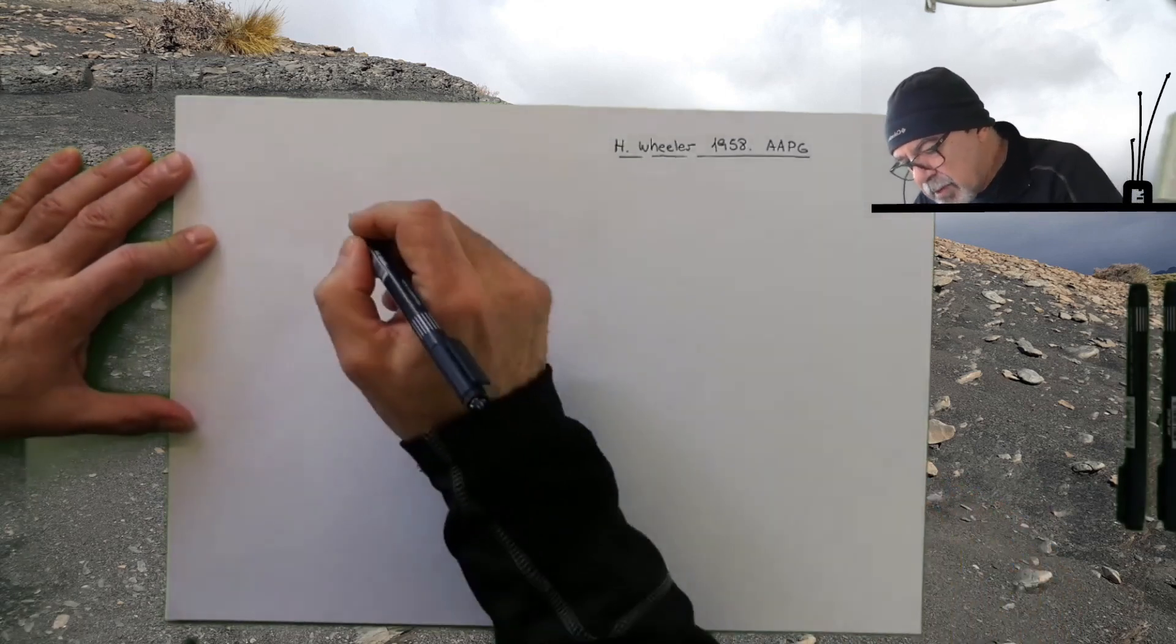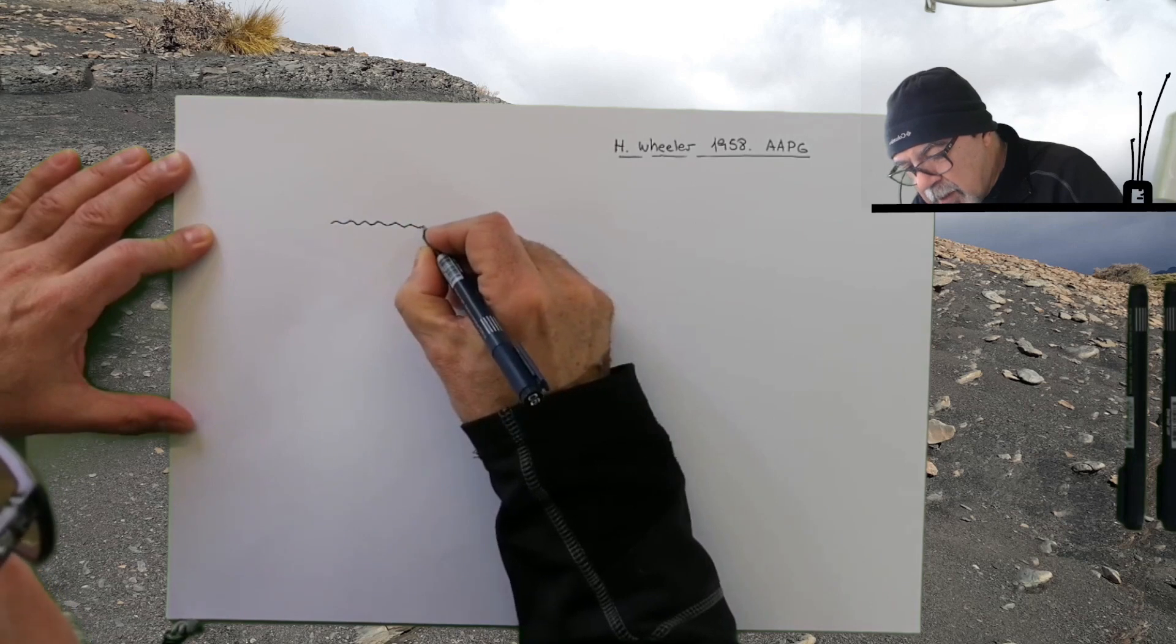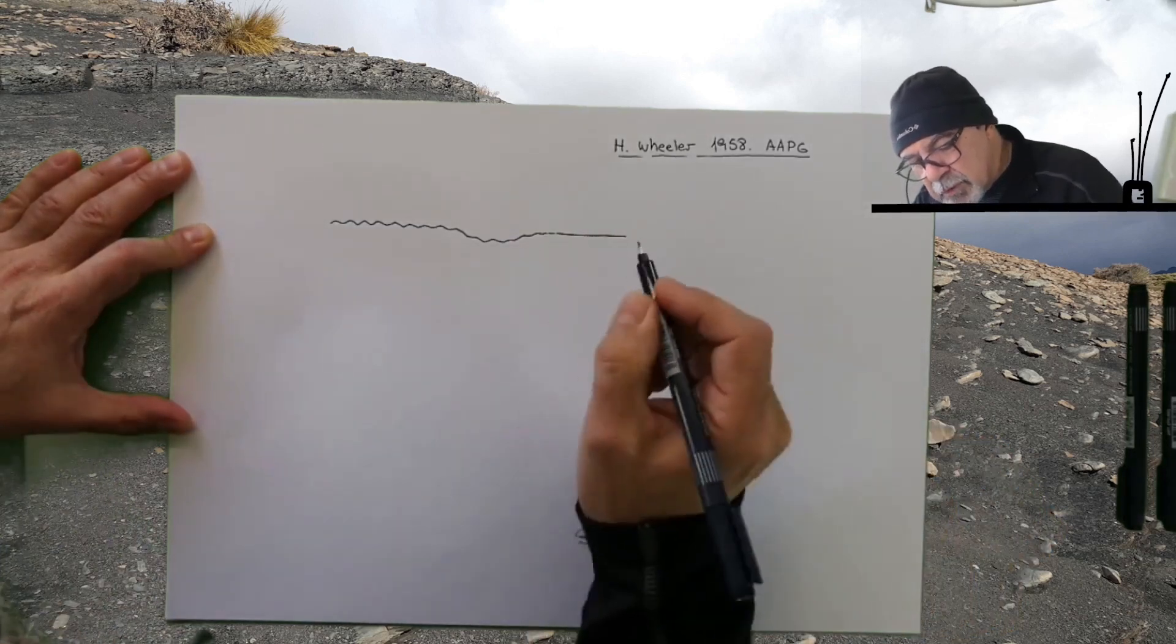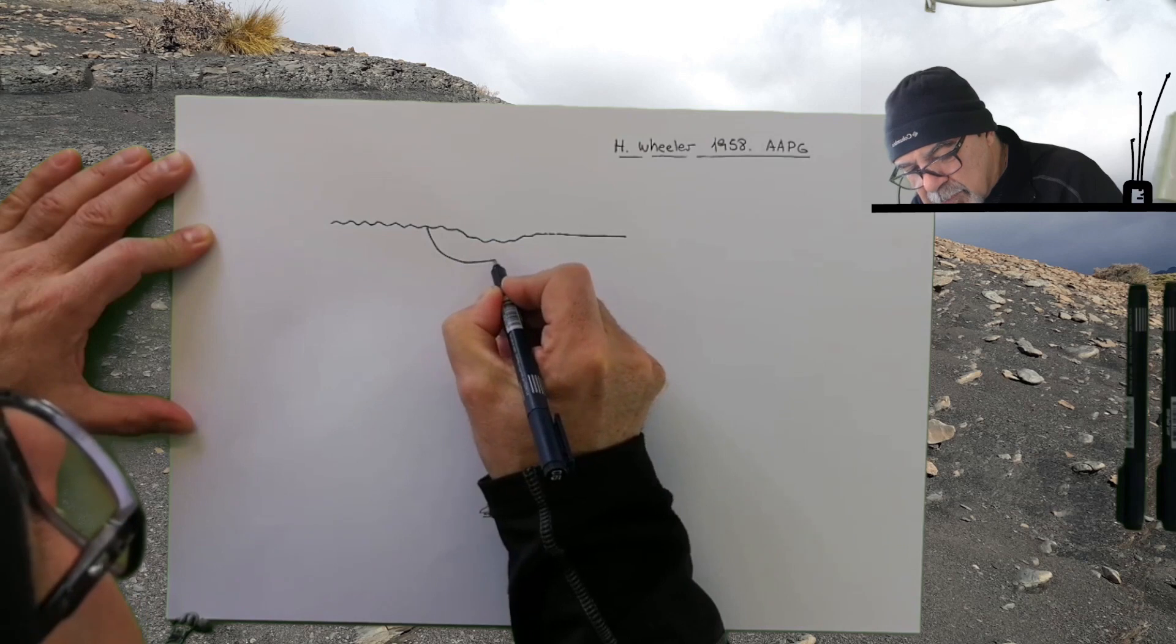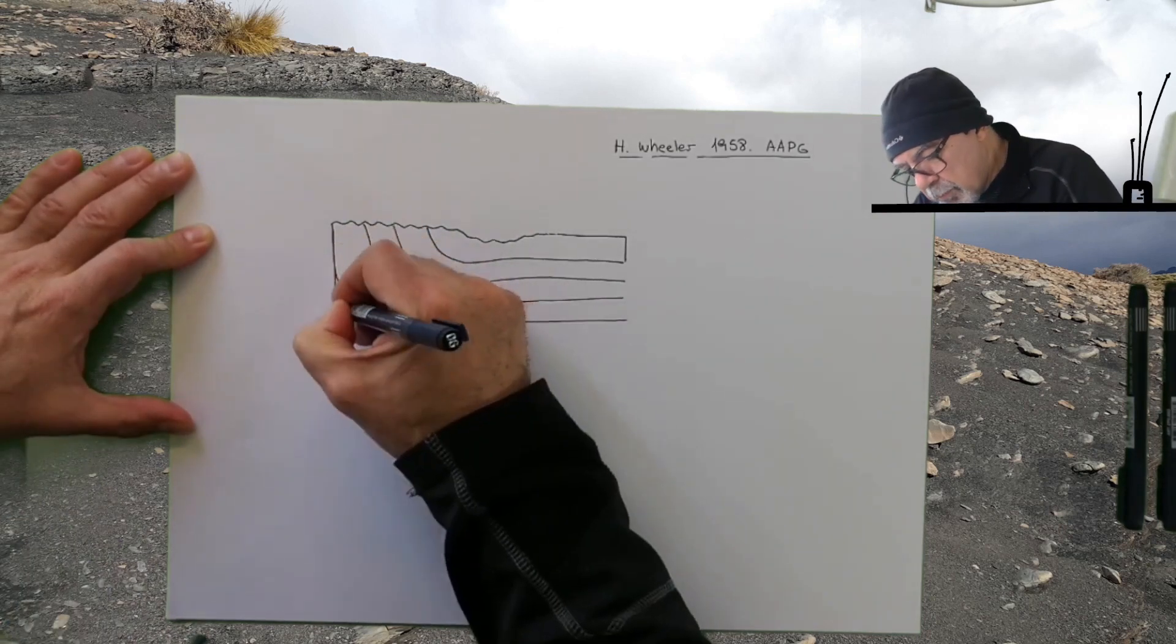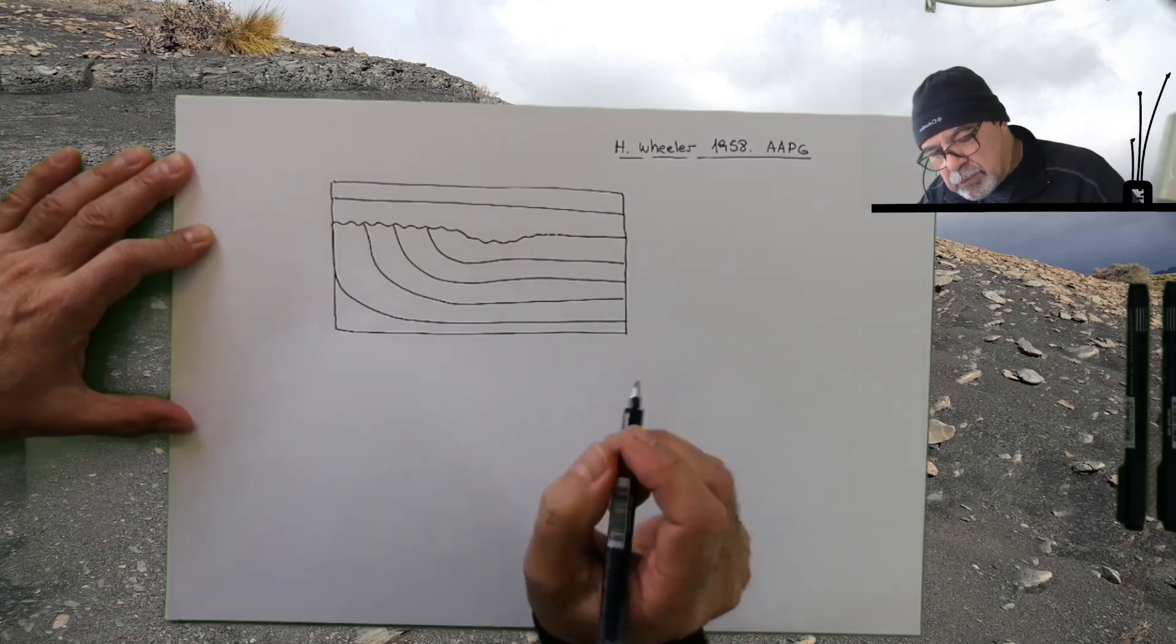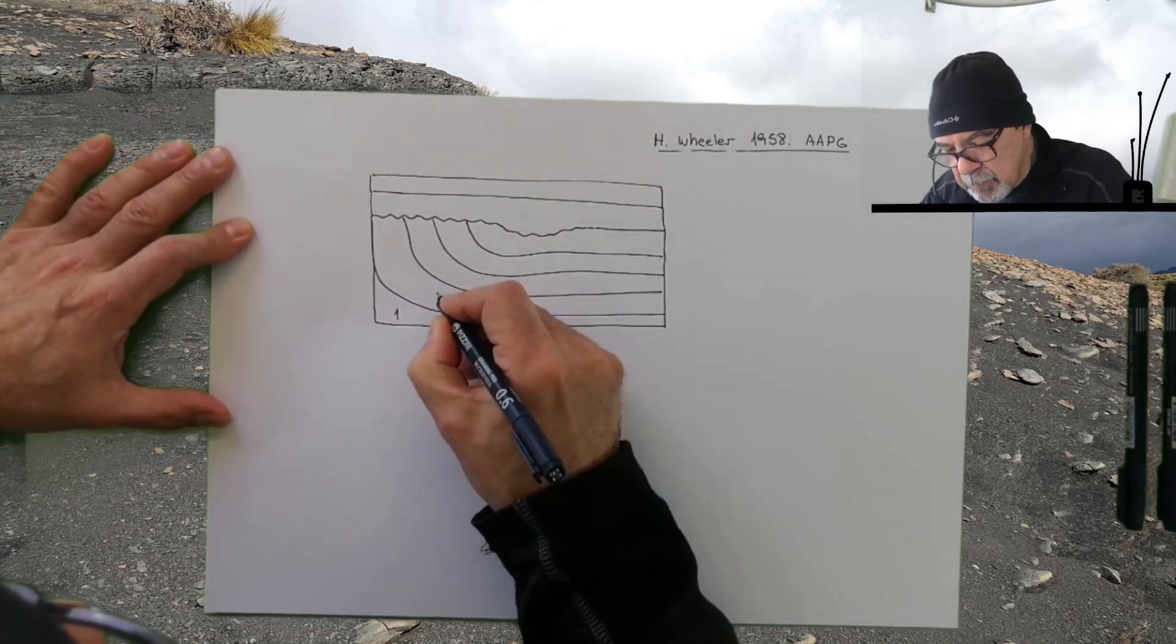Now for this first exercise we are going to build some hypothetical diagram in which you have an unconformity that goes literally into a disconformity and finally a paraconformity. So we are going to draw here some beds. For us this could be a stratigraphic section.